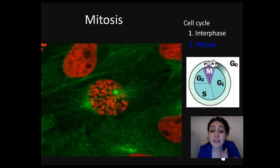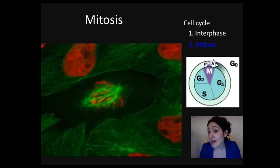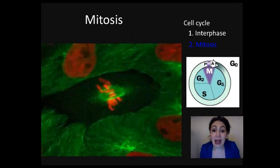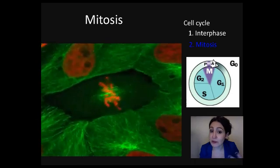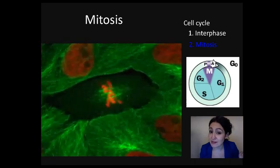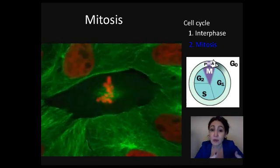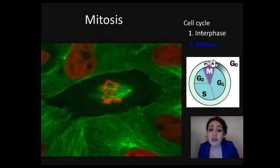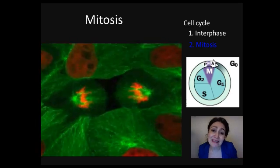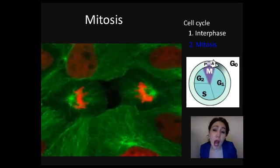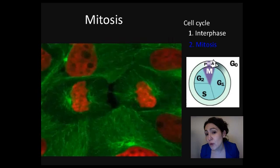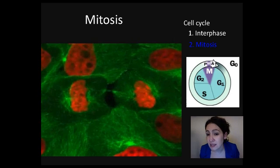Let's check out a kidney cell that has condensed chromosomes now lined up at the center of the cell. Microtubules are doing this, and once they are lined up at the center the cell will pull the sister chromatids apart so they go to opposite sides, and we begin to see the nuclear envelope reforming and the chromosomes decondensing back into chromatin.